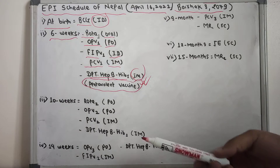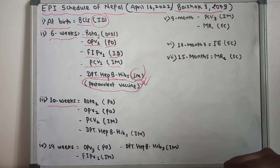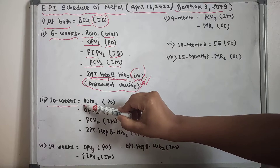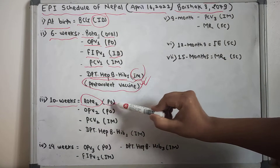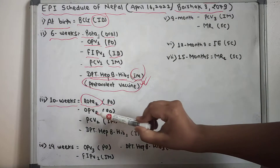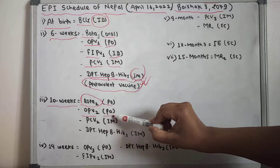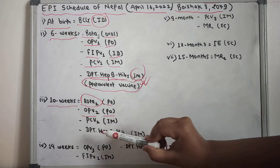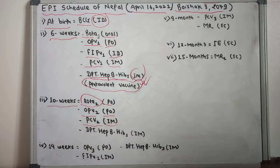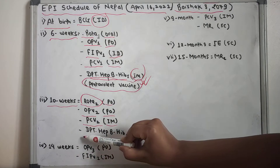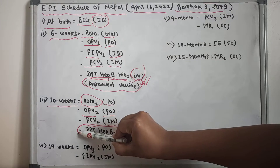After 10 weeks of birth, the second dose of the Rota vaccine is given orally, the second dose of the Oral Polio Vaccine is given orally, the second dose of the PCV vaccine is given intramuscularly, and the second dose of the Pentavalent vaccine is also given at 10 weeks of age.